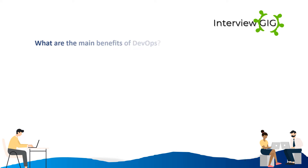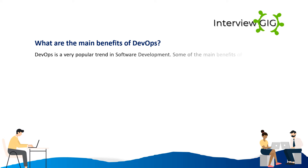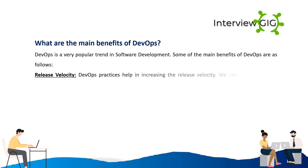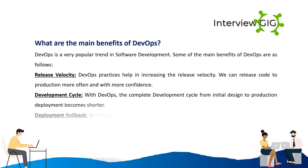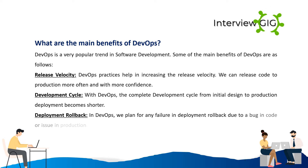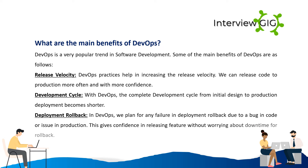DevOps is a very popular trend in software development. Some main benefits include: Release velocity — DevOps practices help increase release velocity, allowing us to release code to production more often and with more confidence. Development cycle — the complete development cycle from initial design to production deployment becomes shorter. Deployment rollback — in DevOps, we plan for any failure in deployment rollback due to a bug or issue, giving confidence in releasing features without worrying about downtime.